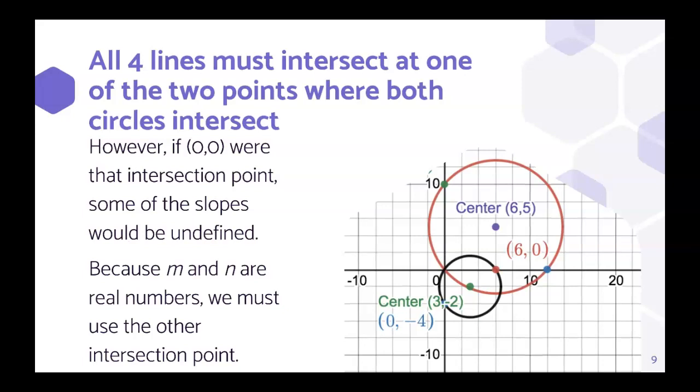So if we have all four lines, they have to intersect at one of these two points where both circles intersect, right here at (0, 0). However, if (0, 0) were that intersection point, some of the slopes would be undefined, like when it went from (0, 10) to (0, 0). And because m and n are real numbers, we have to use this other intersection point right here.